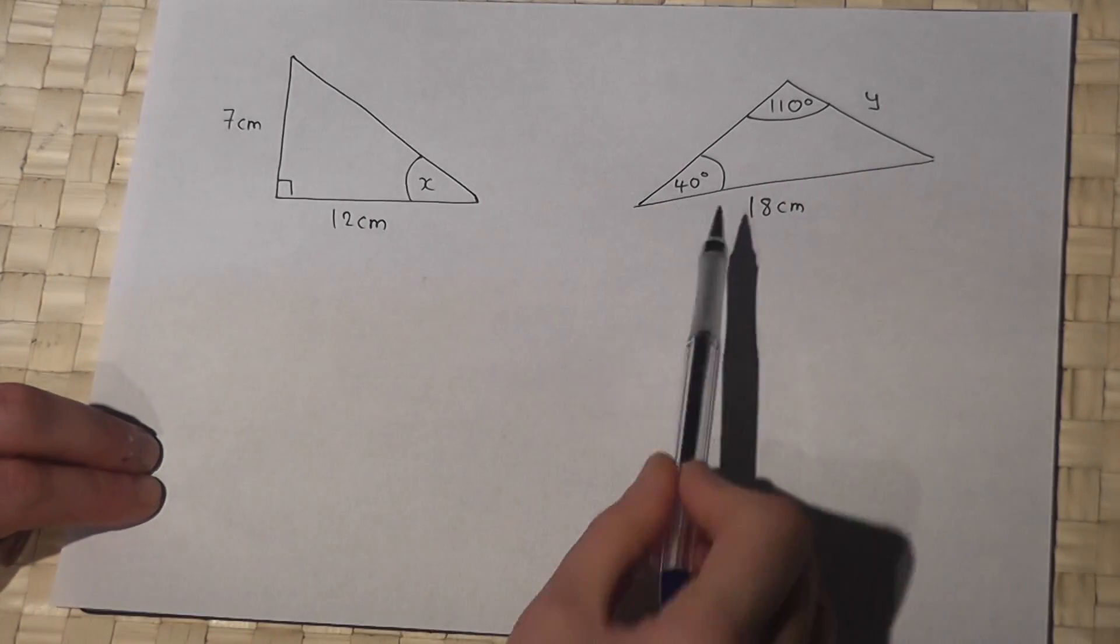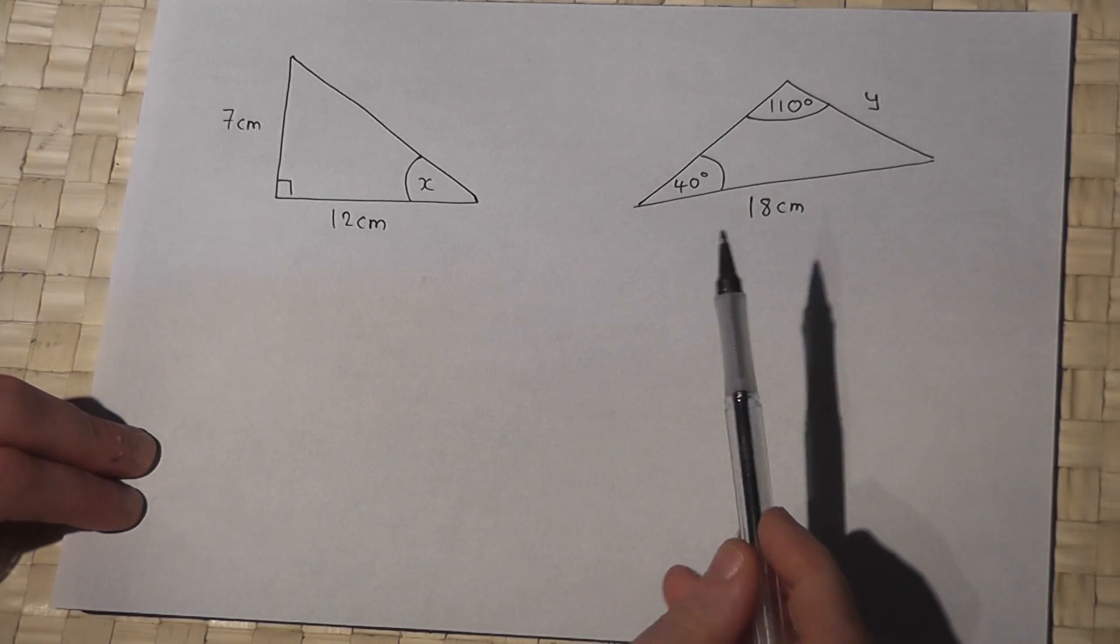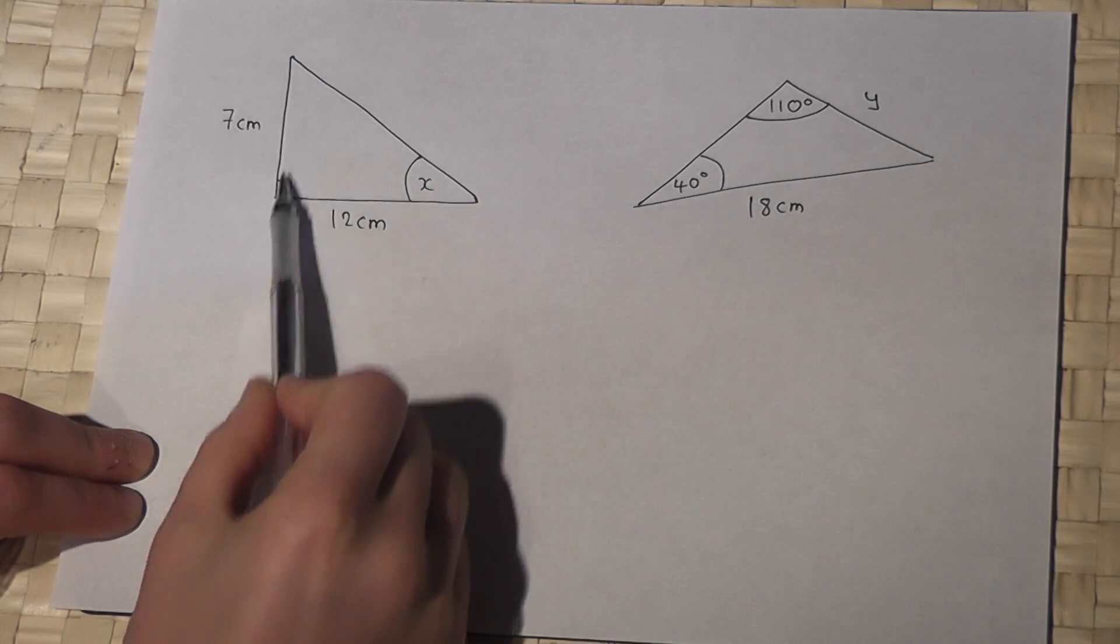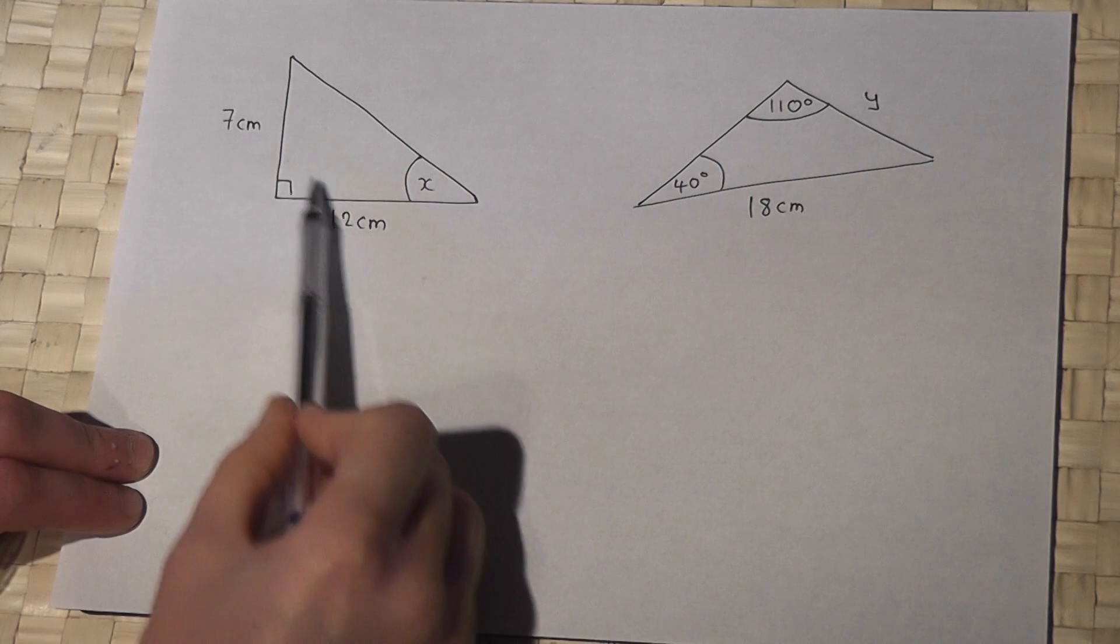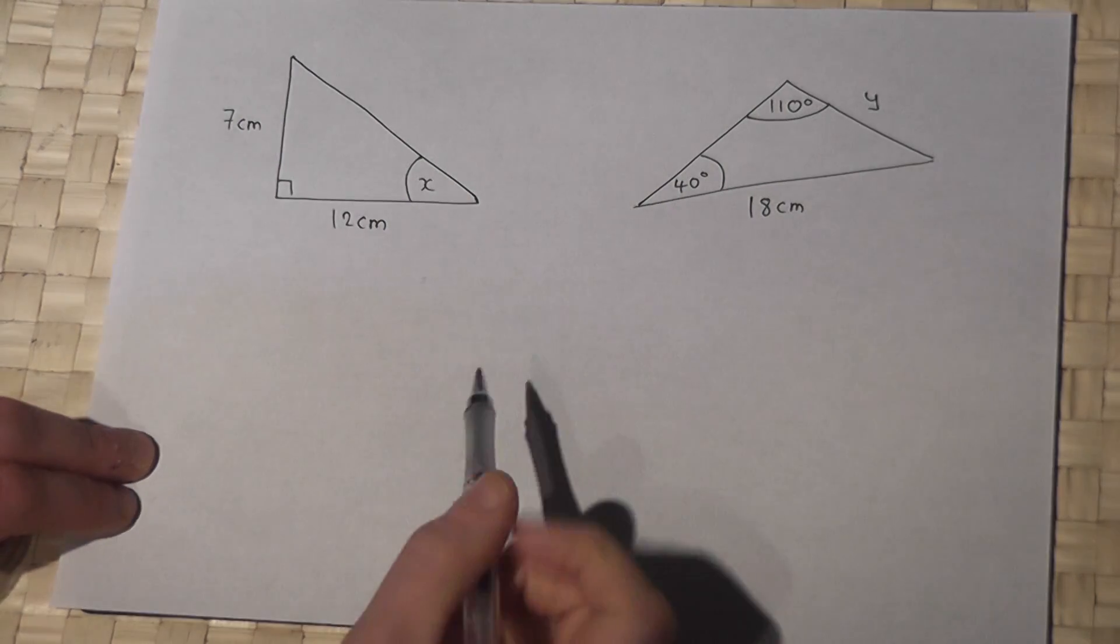This video reviews two applications of trigonometry. The first one is linked to a right-angled triangle. We're told two sides and we're asked to find an angle x.